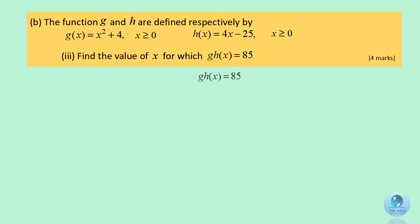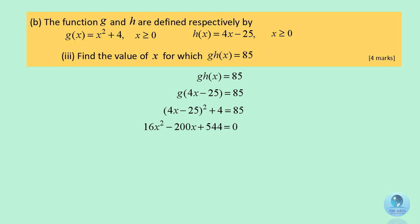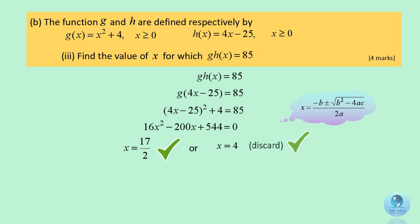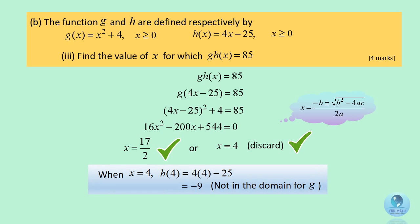For g(h(x)) equals 85, we substitute the function h into function g, then expand the equation and we get 16x squared minus 200x plus 544 equals 0. Using the quadratic formula, we get x equals 17 over 2 and x equals 4. We only take x equals 17 over 2, because substituting 4 into h gives negative 9, which is not in the domain of g.